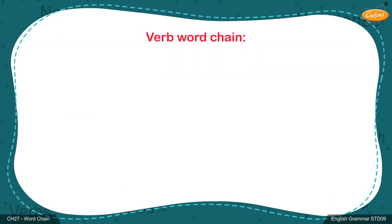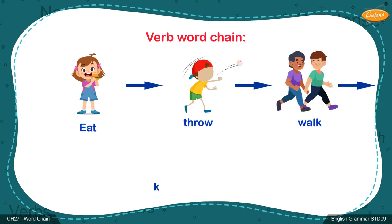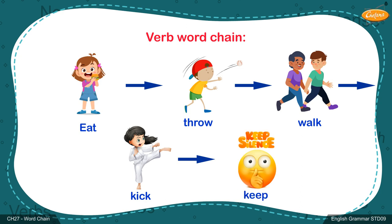Let us see the word chain of verbs. Example: eat, throw, walk, kick, keep. Minimum four words are to be written. Remember, if it is a word chain of verbs, you have to use only verbs, and if it is a noun word chain, you have to use nouns only.